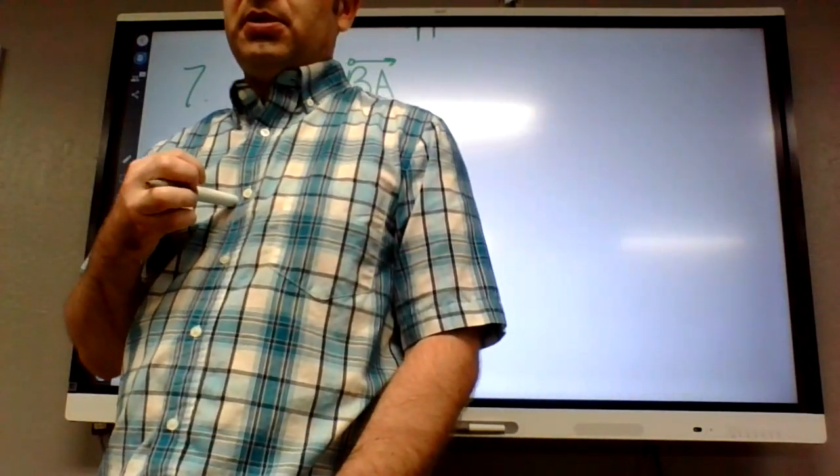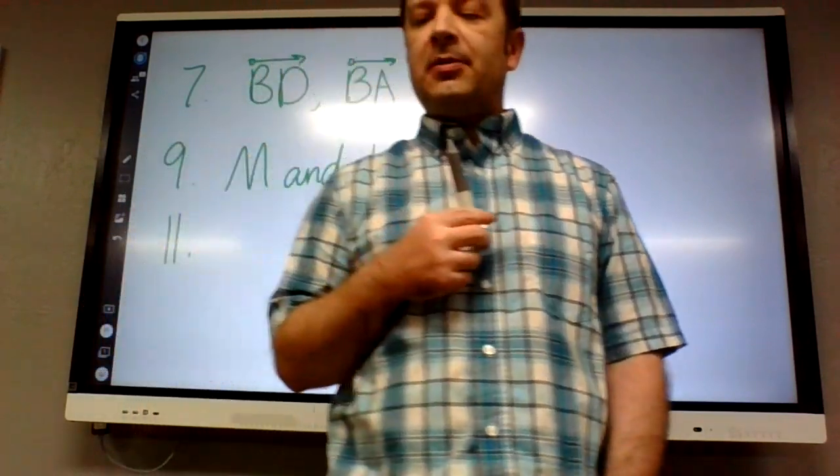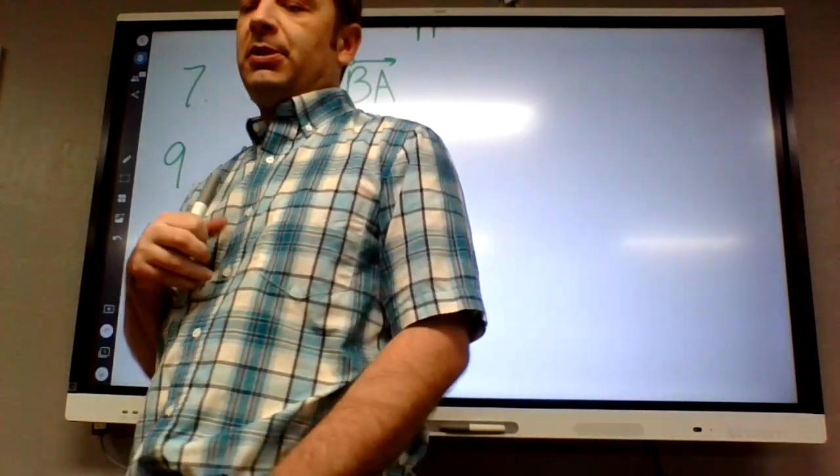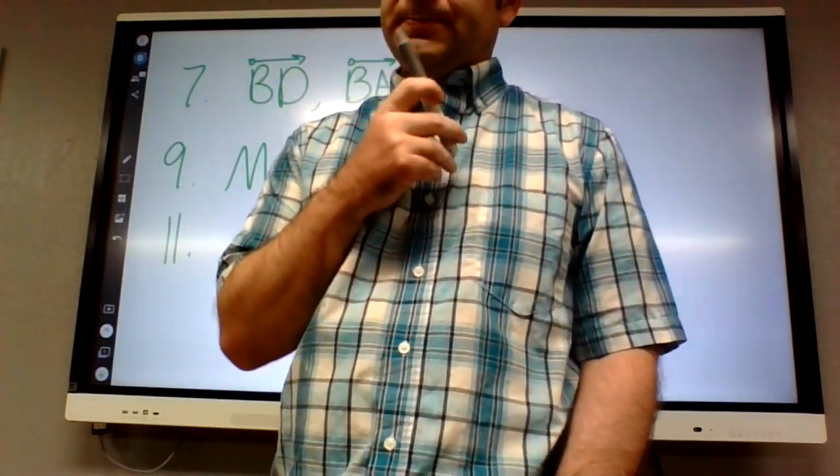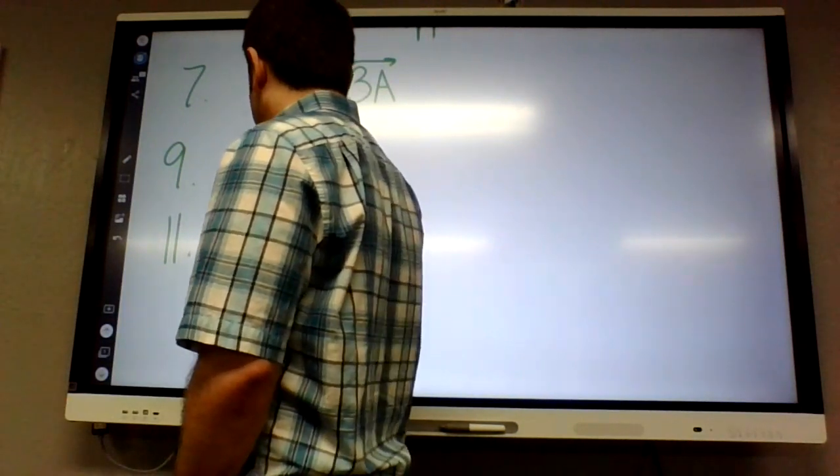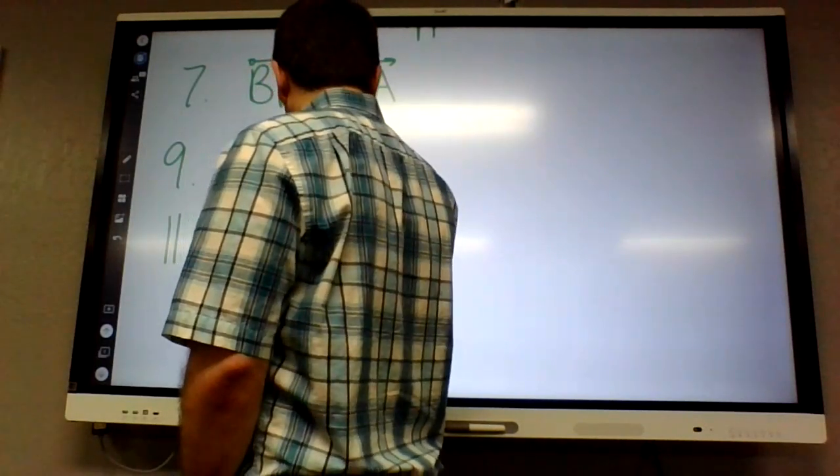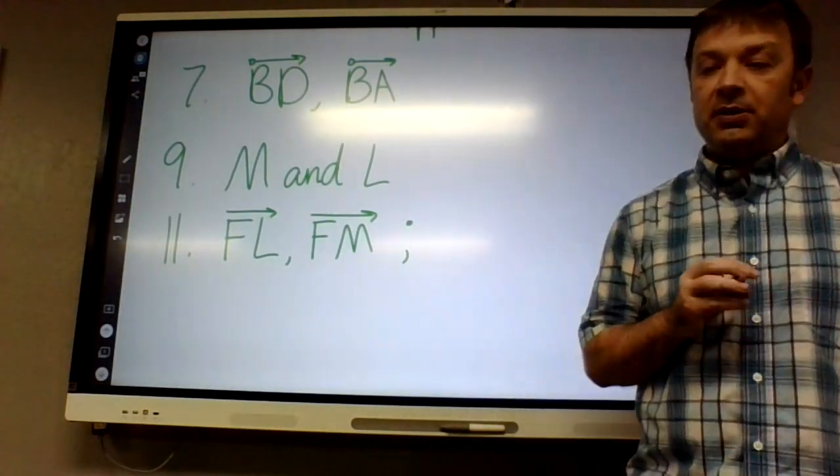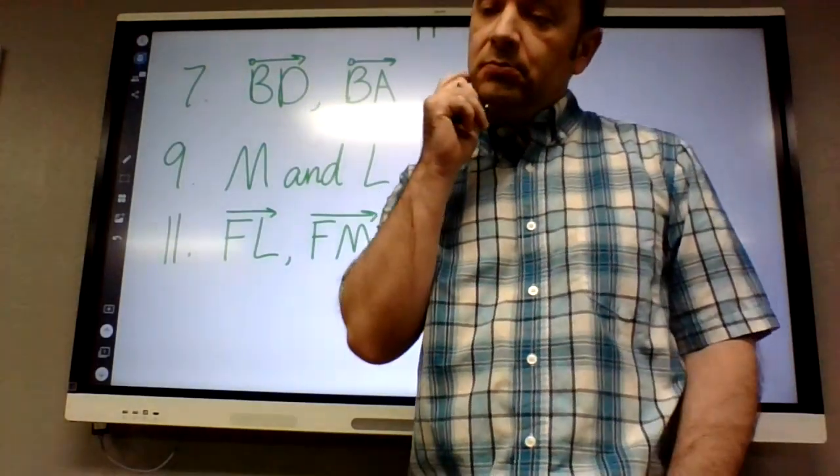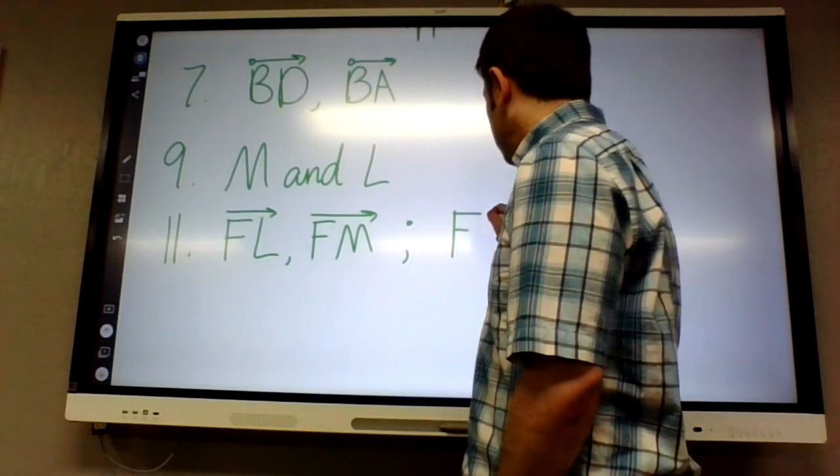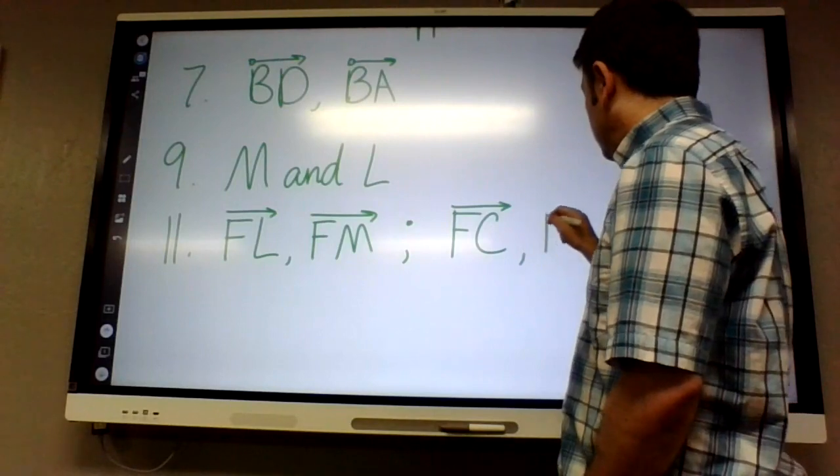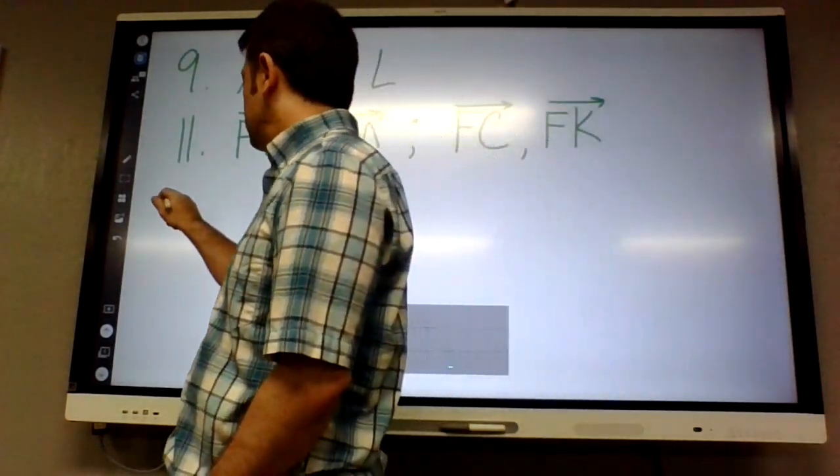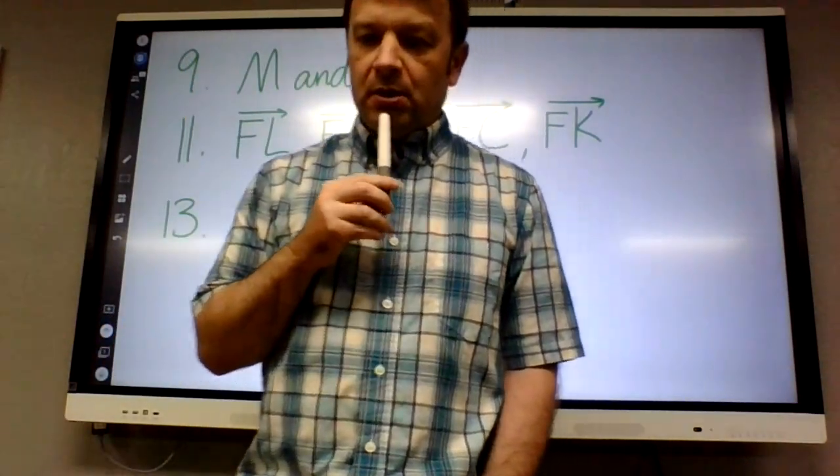Okay, number eleven. Name two pairs of opposite rays. Linux, can you give me one pair of opposite rays? Yep, FL and FM. So we're talking about rays which means we need to use that symbol, FL and FM. Semicolon. Somebody else give me another pair of opposite rays. Corey? FC and FK. So they have the same endpoint F and they're going in opposite directions on the same line.